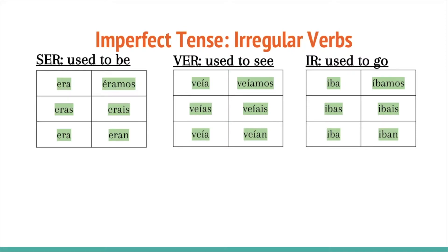There's not going to be any others added to this little group. The first is ser, which is used to mean 'used to be.' The conjugations are: era, eras, era, éramos, erais, eran. That is ser.